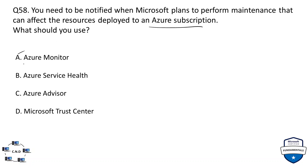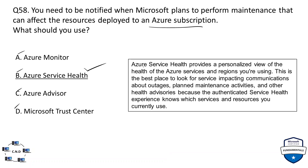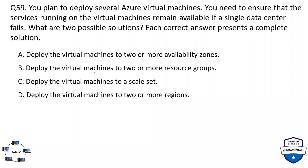Options: A) Azure Monitor, B) Azure Service Health, C) Azure Advisor, or D) Microsoft Trusted Center. The correct option is Azure Service Health. Azure Service Health provides a personalized view of the health of the Azure services and regions you are using. It is the best place to look for service-impacting communications about outages, planned maintenance activities, and other health advisories, because it knows which services and resources you currently use.